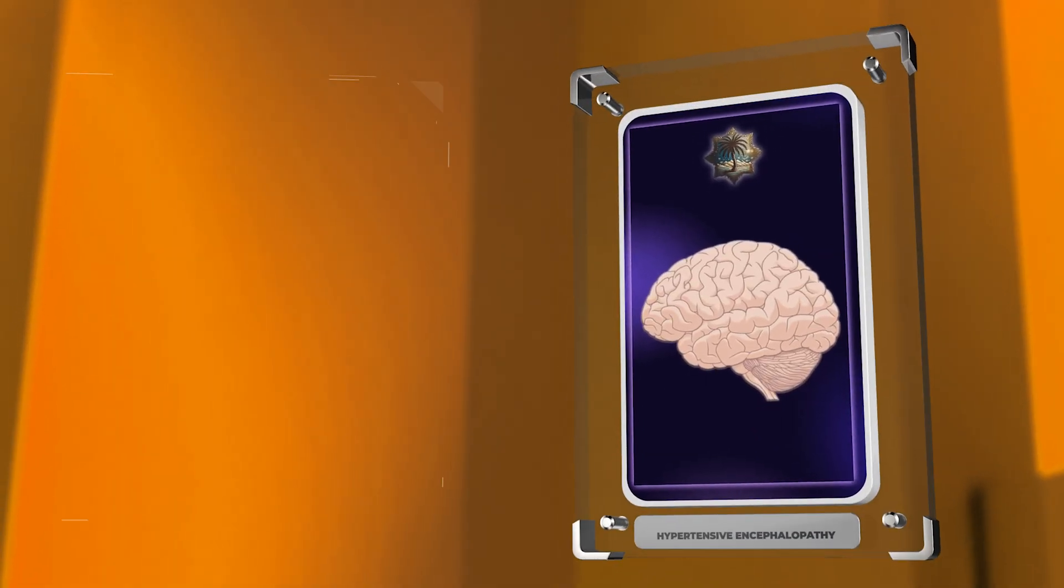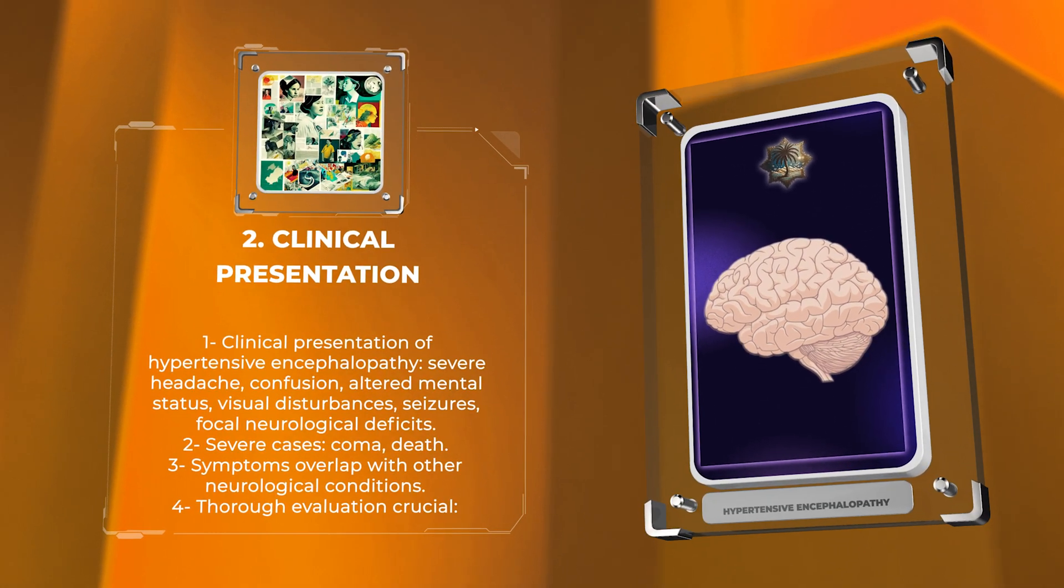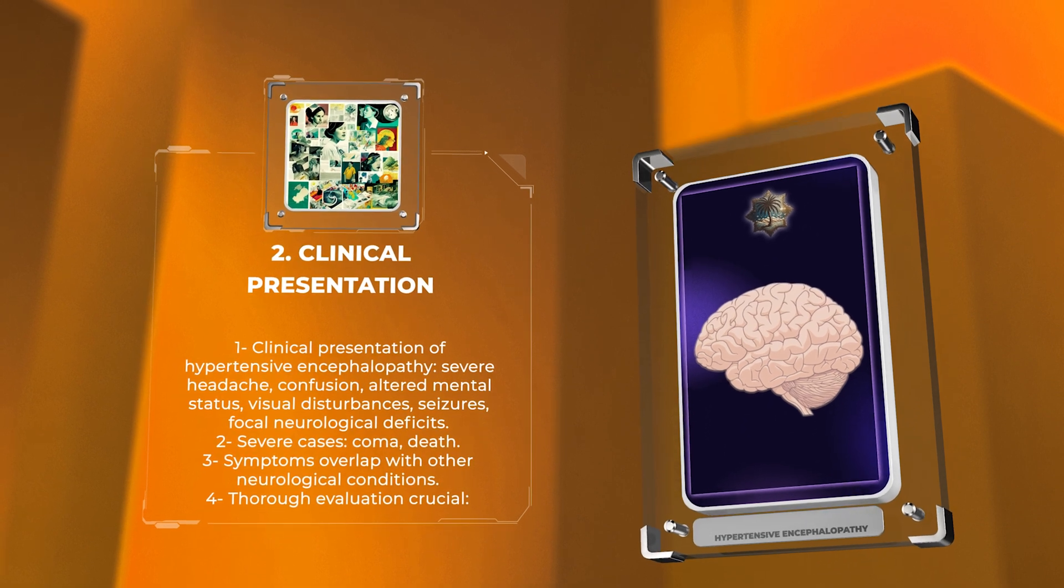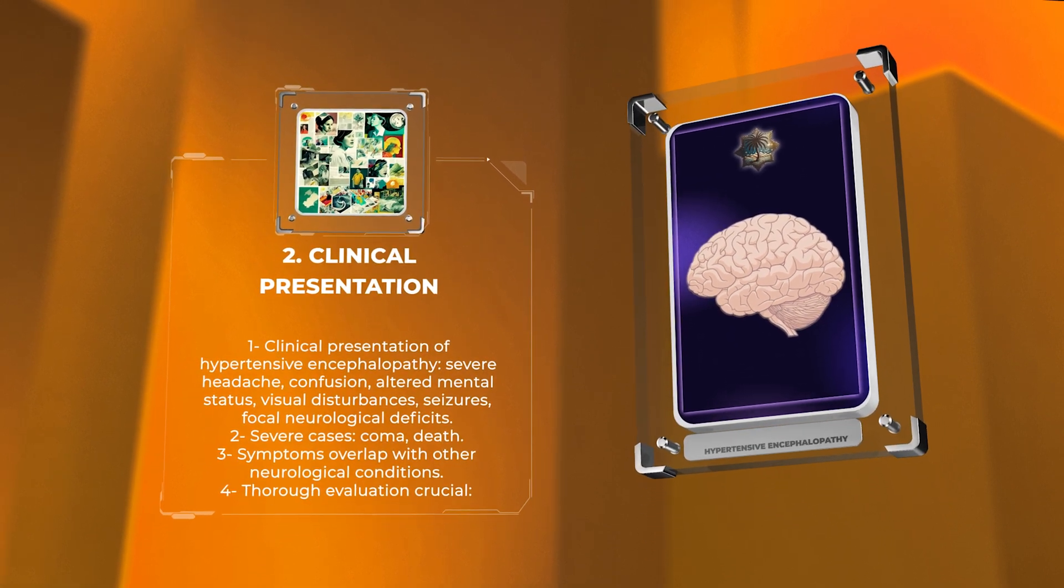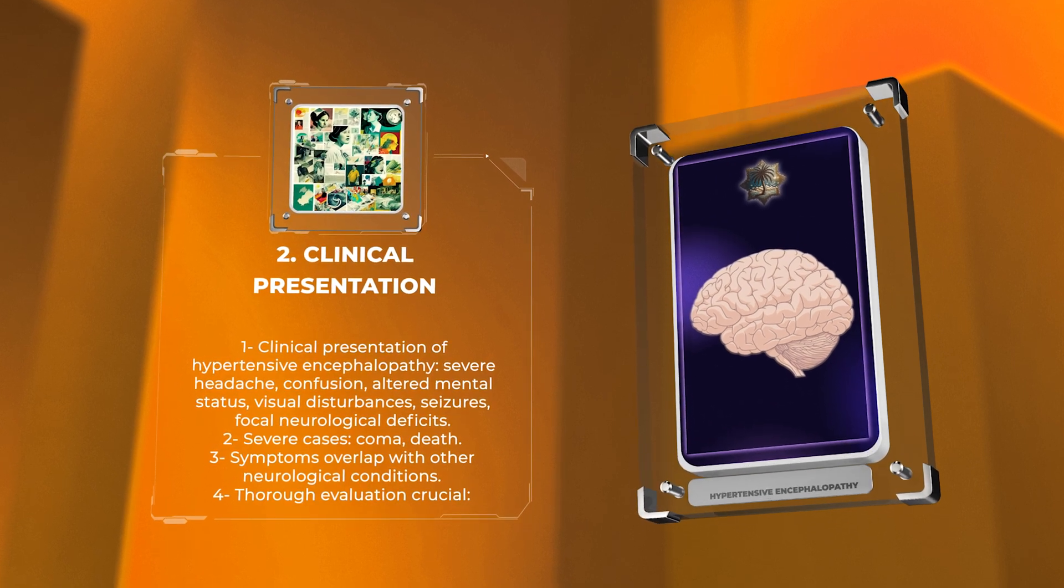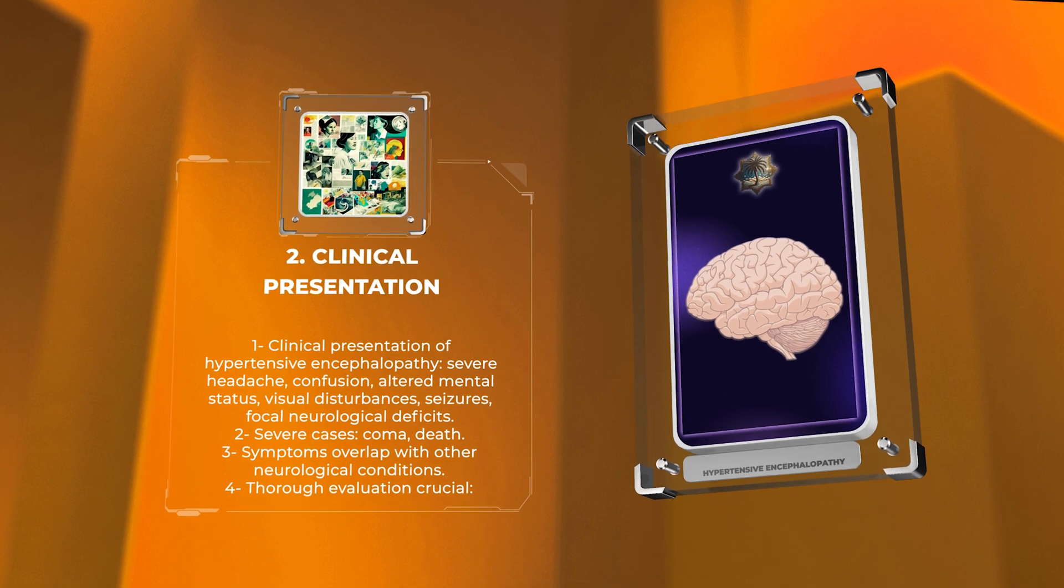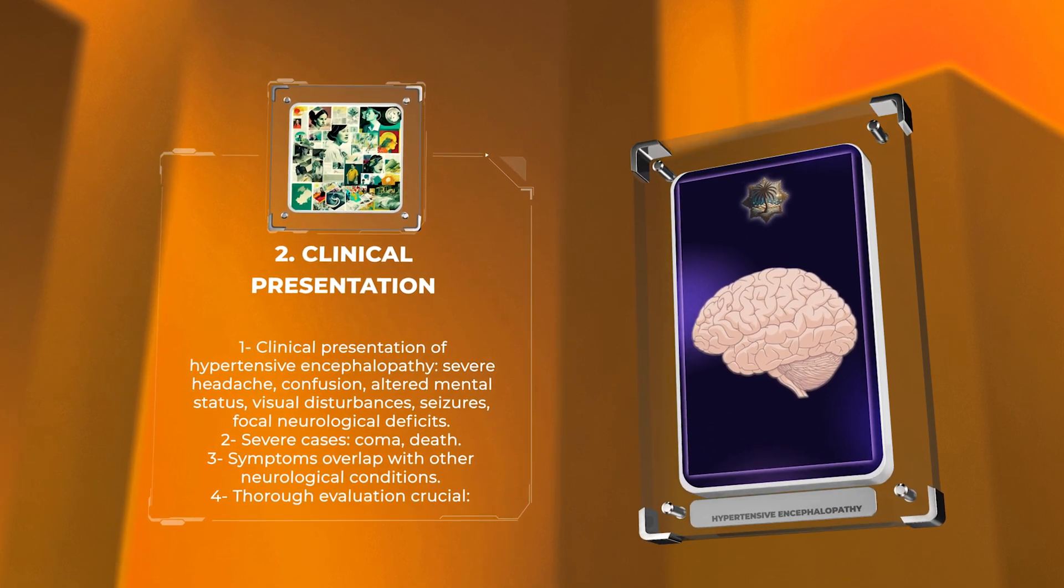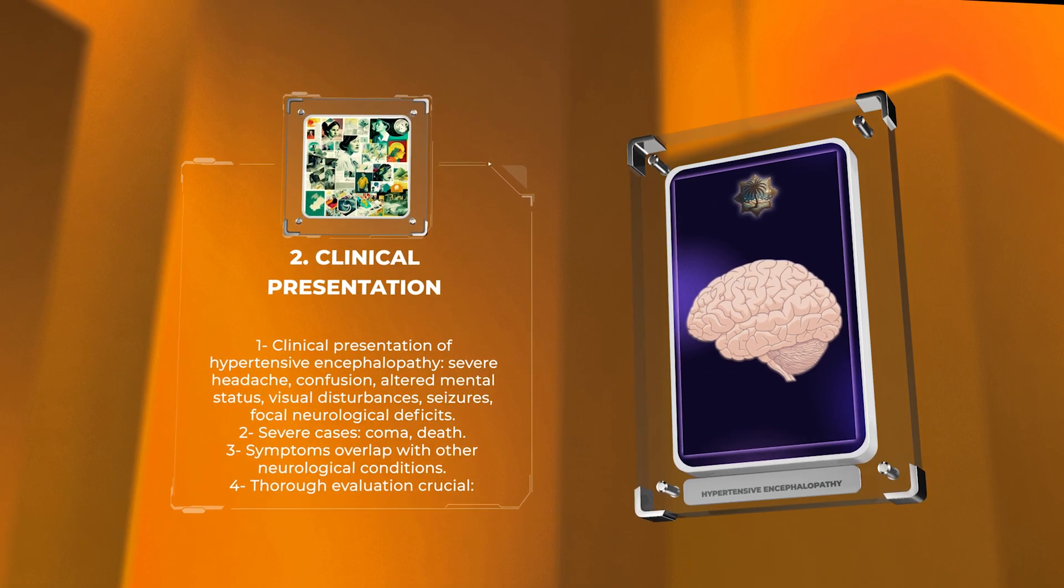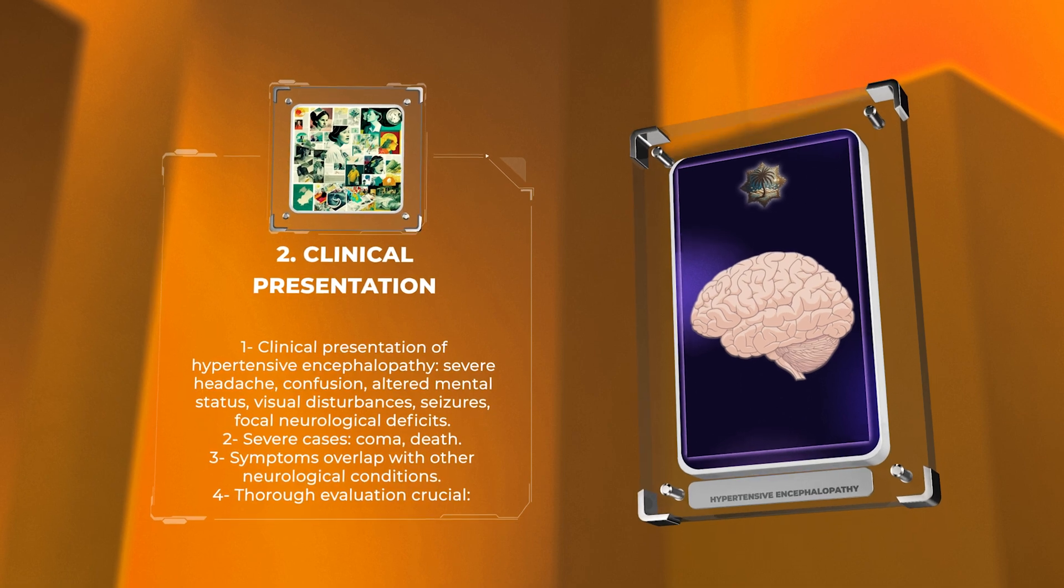The clinical presentation of hypertensive encephalopathy can vary widely depending on the severity and duration of hypertension. Common symptoms include severe headache, confusion, altered mental status, visual disturbances, seizures, and focal neurological deficits such as hemiparesis or aphasia. In severe cases, coma or even death may occur. It is important to note that the symptoms of hypertensive encephalopathy often overlap with other neurological conditions. Therefore, a thorough evaluation is crucial for accurate diagnosis and appropriate management.